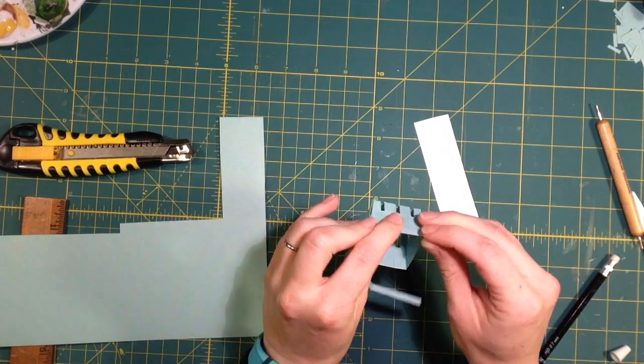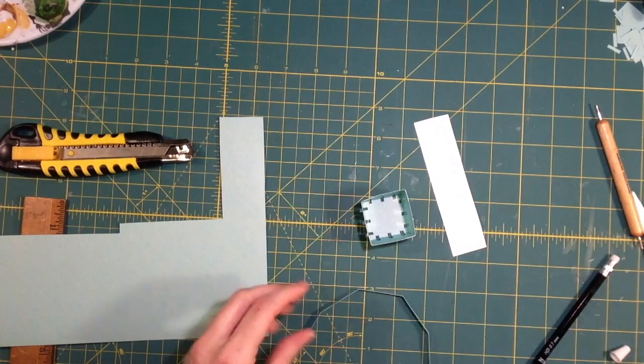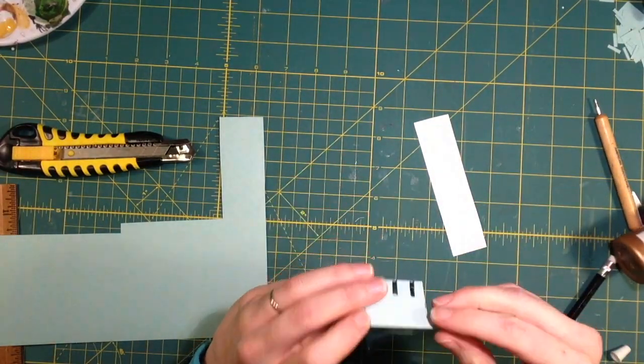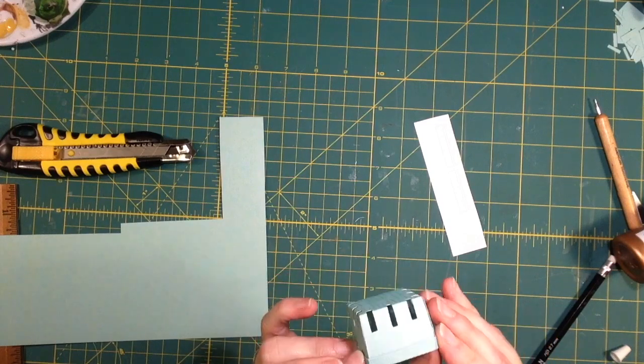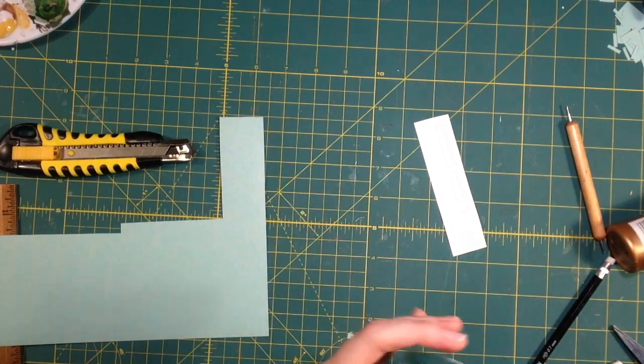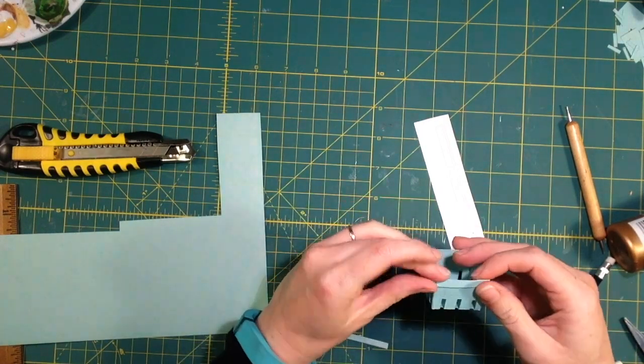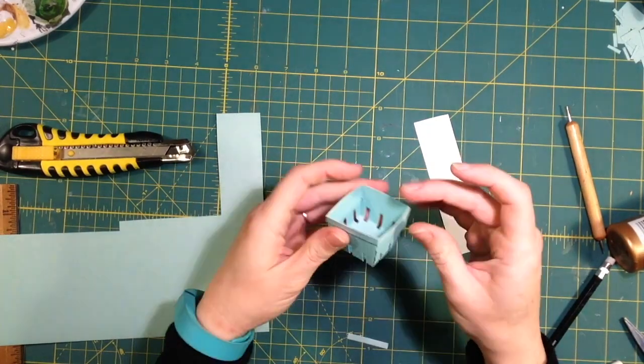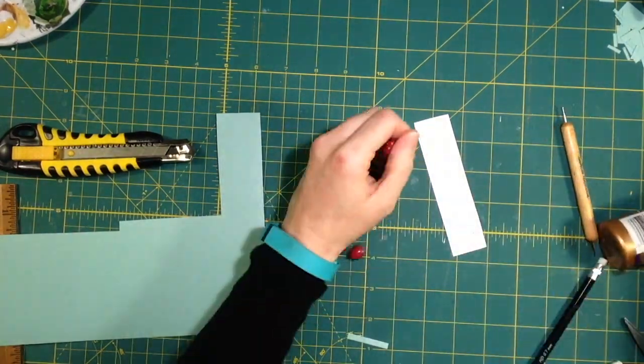I'm going to fold the edges around before I put the glue on, and I left it a little long so I can just trim it after it's on. It should be flush with the top of the basket.